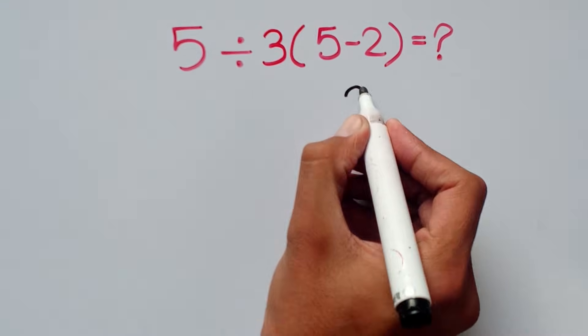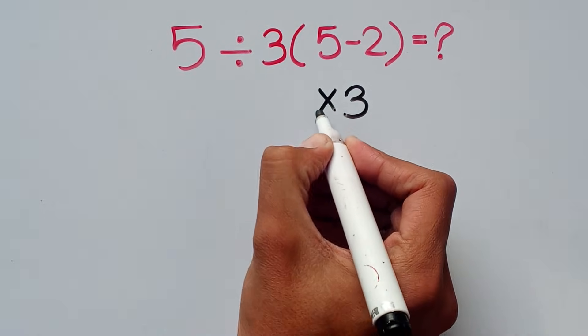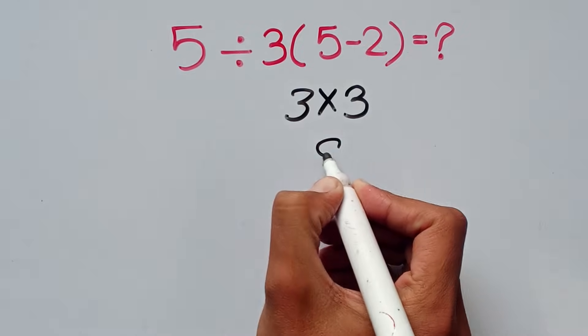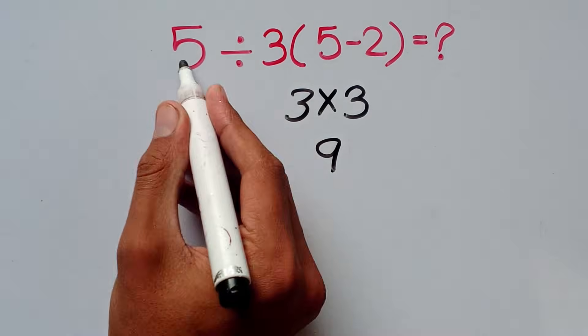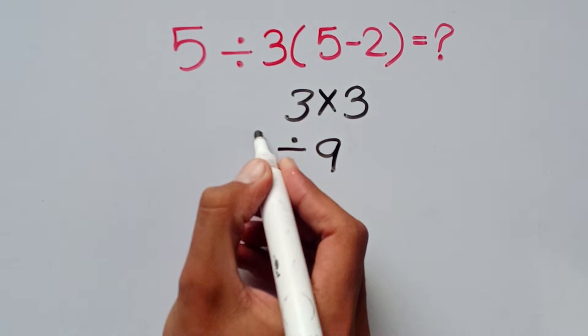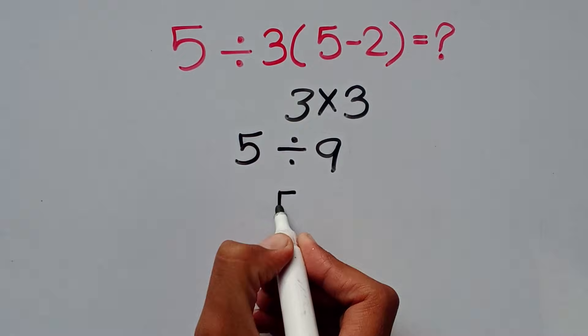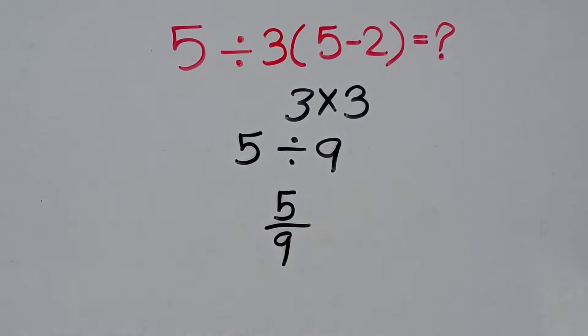5 minus 2 equals 3, multiply by this 3, so 3 times 3 equals 9, divided by 5. So 5 divided by 9, we can write this, but this answer is wrong.